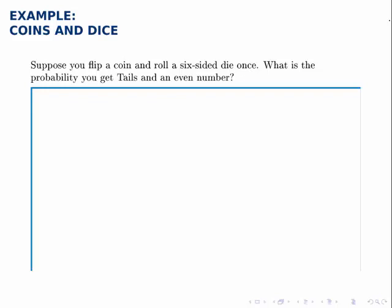Suppose you flip a coin and then roll a six-sided die once. What is the probability that you get tails and an even number?